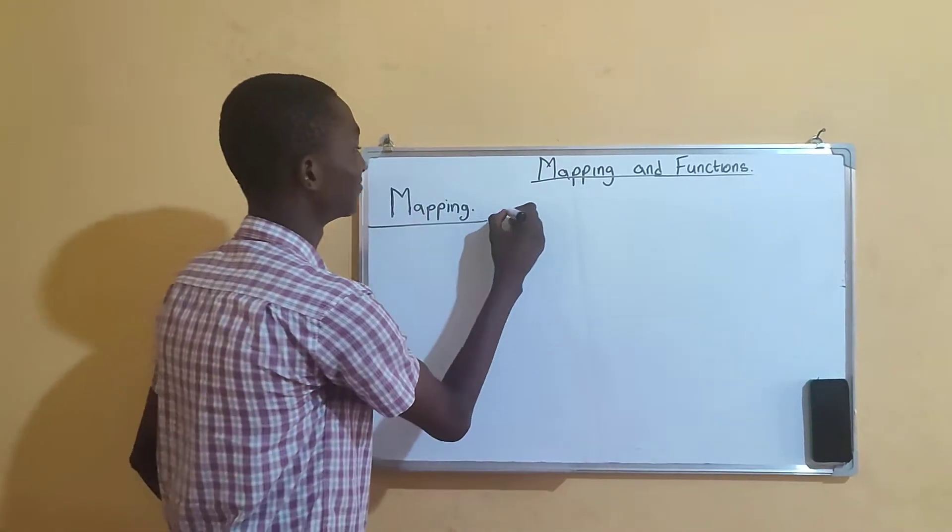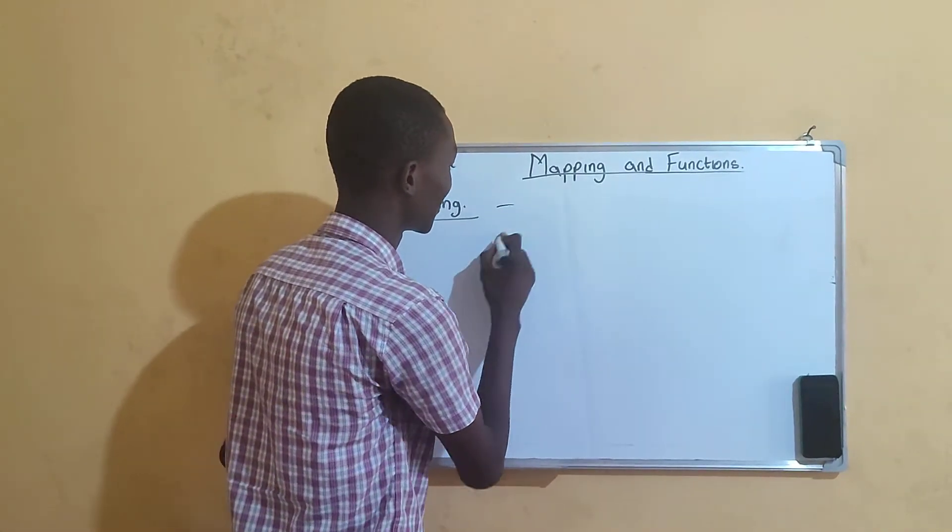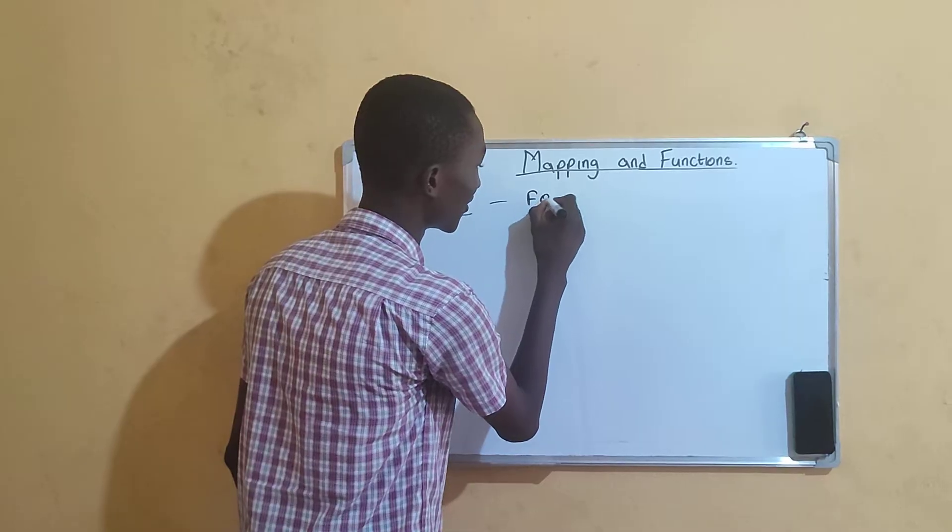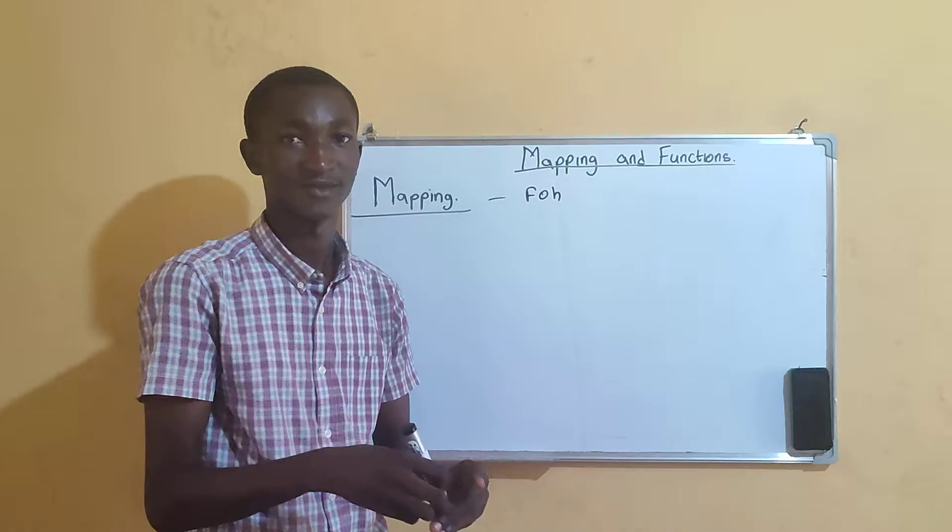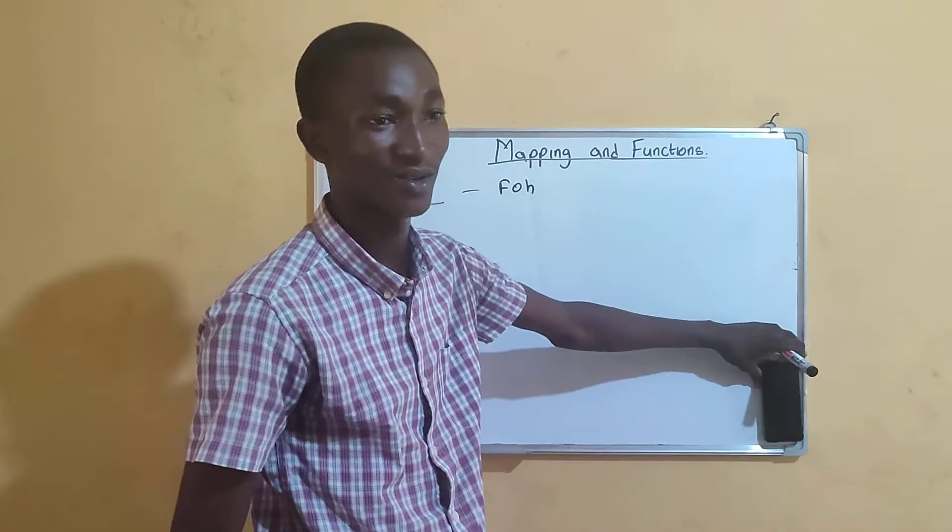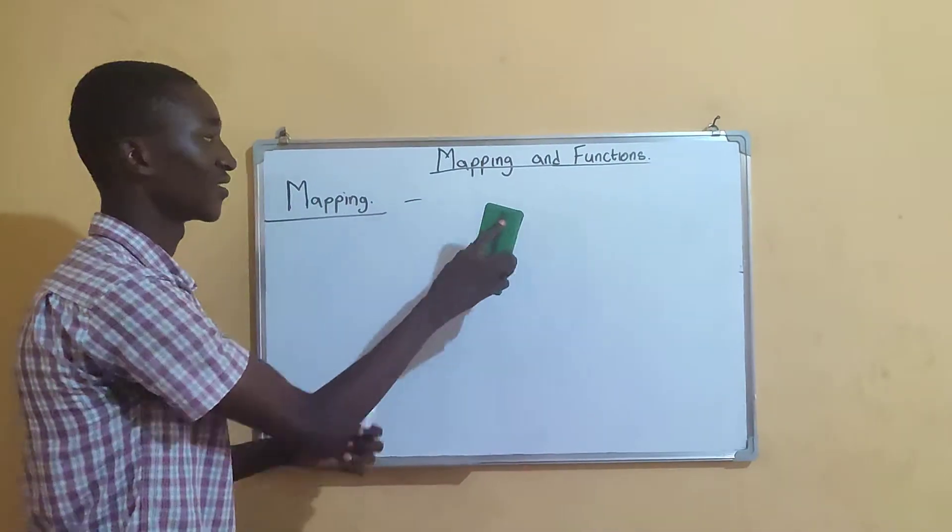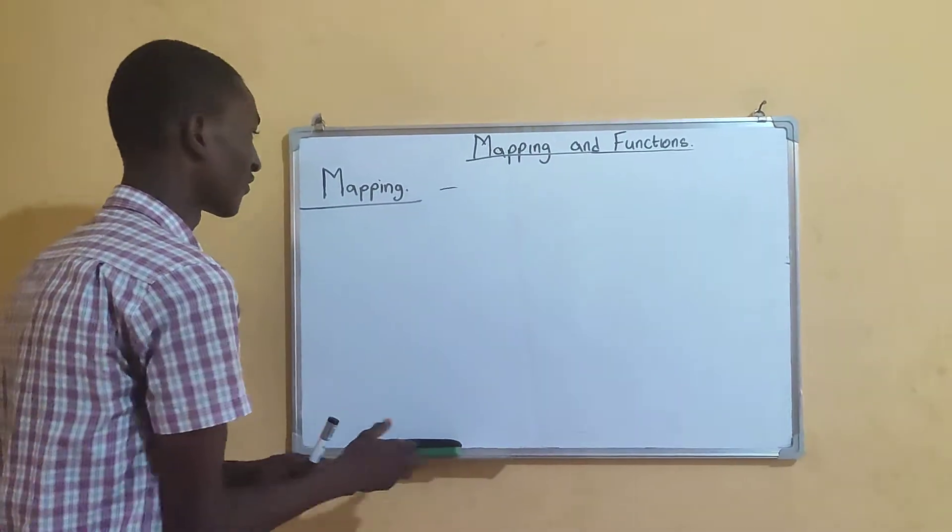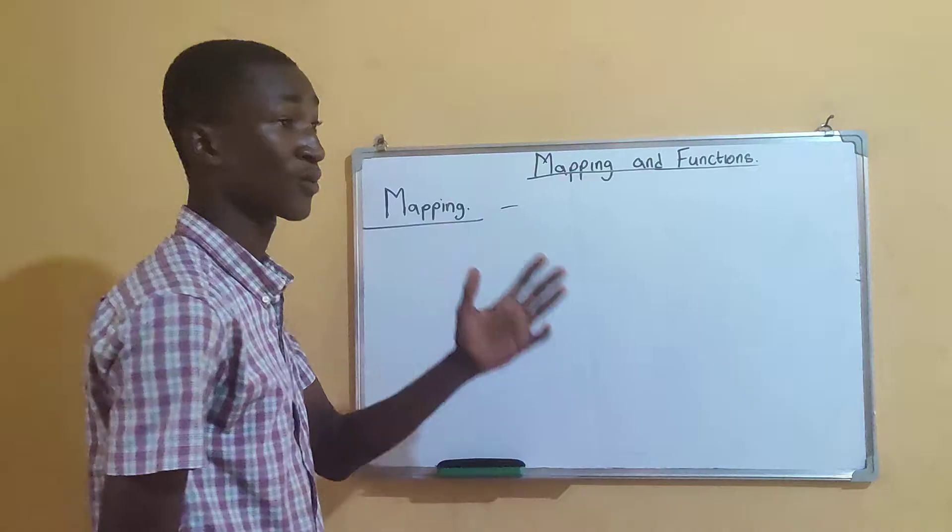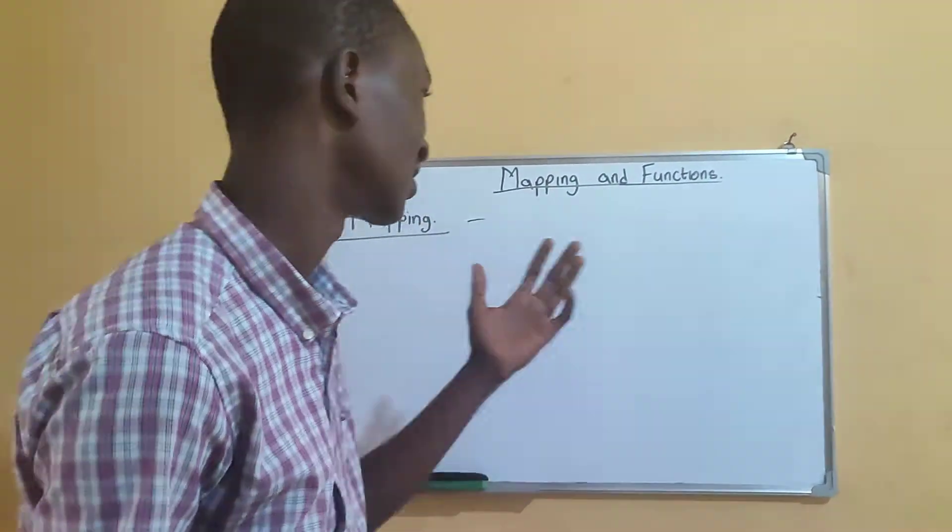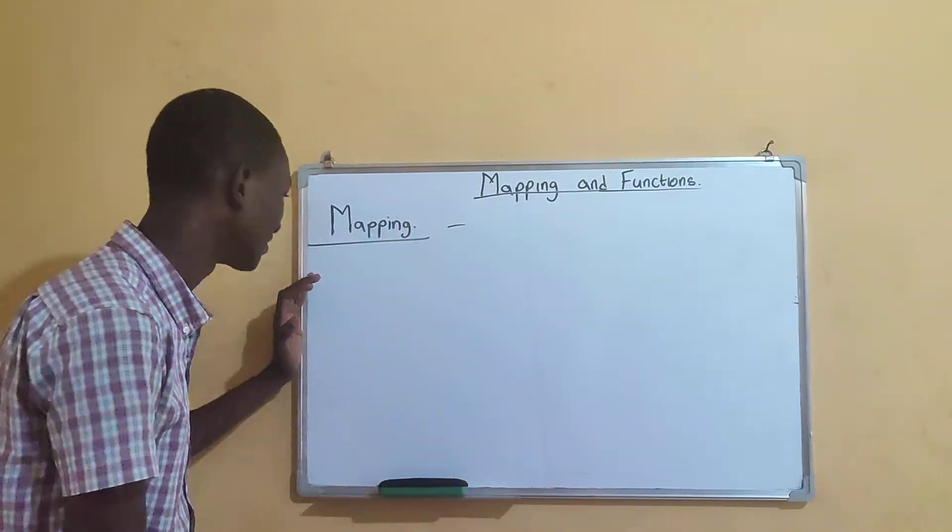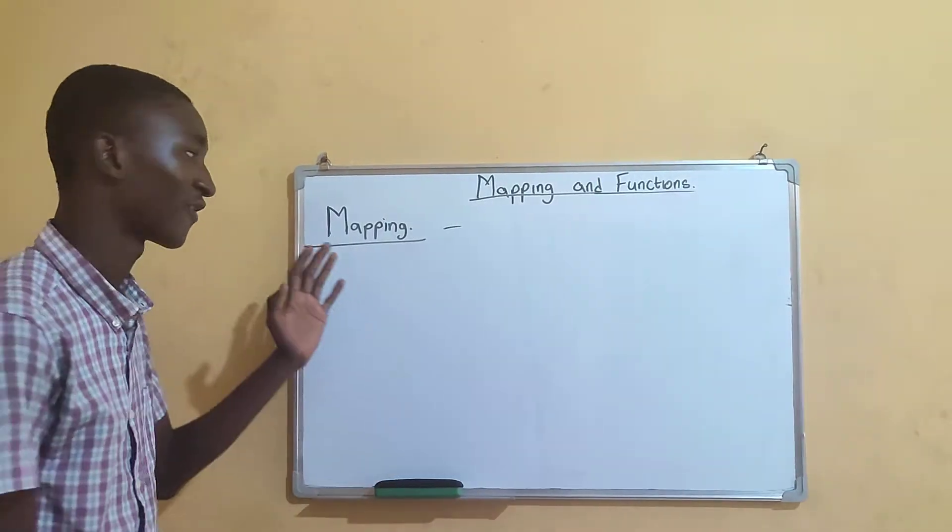That's when you start seeing things like foh and stuff like that. Before we go to examples of putting a function into a function, we have different types of mapping: we have one-to-one mapping, we have onto mapping.